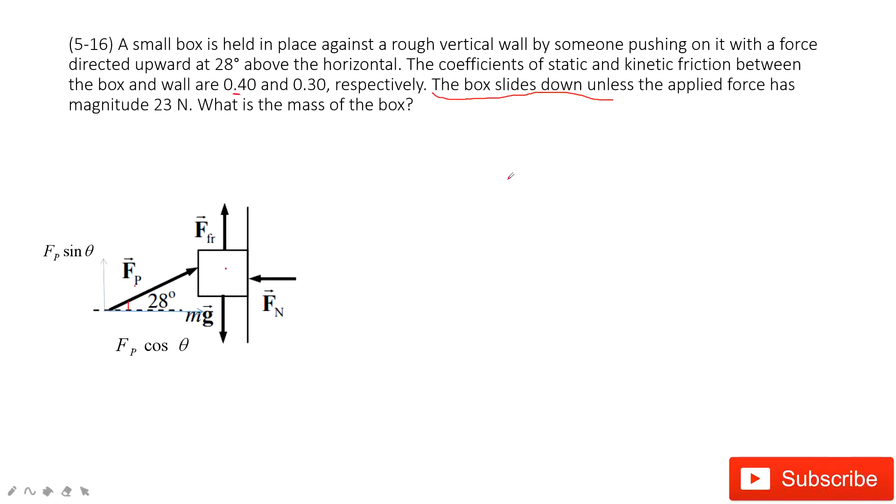Then we can consider Newton's second law. First we look at the y-component. We have the friction plus fp sine theta minus the gravity equals 0 because it is stationary. And then we look at the x-component. We have fp cosine theta minus fn equals 0.